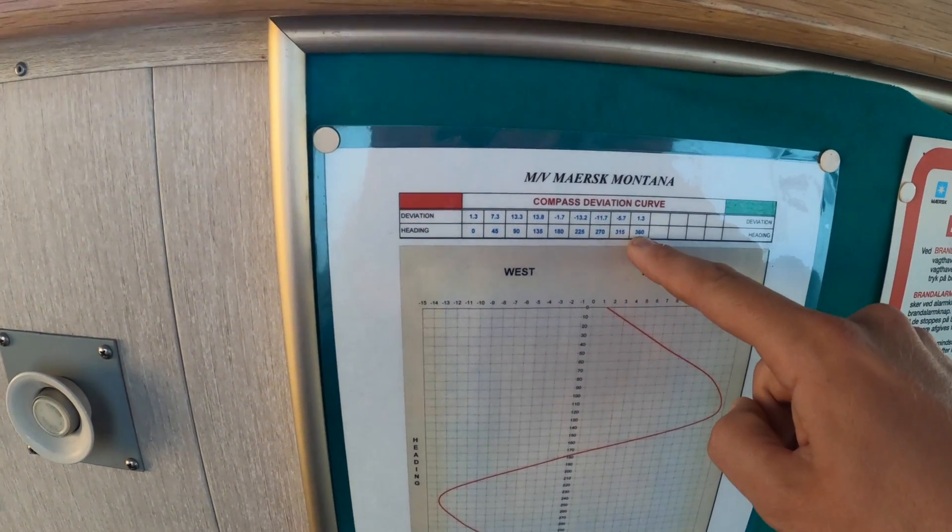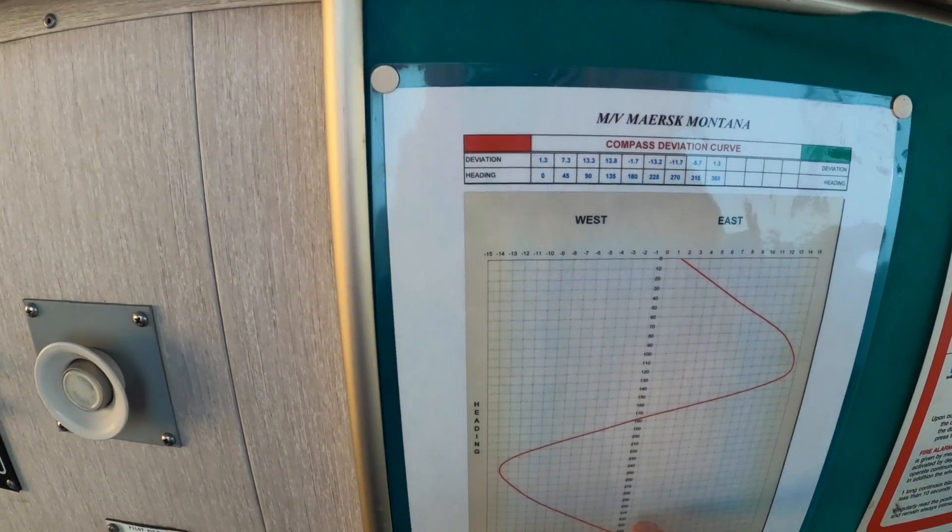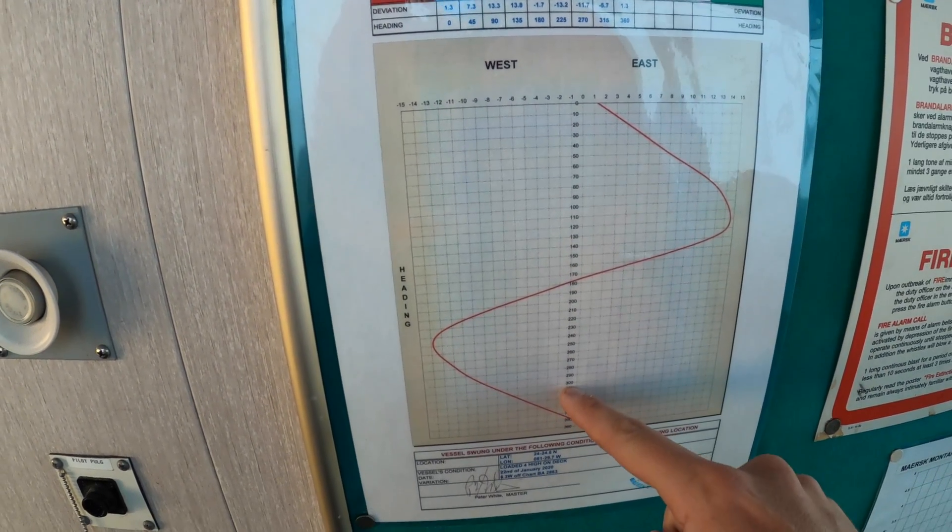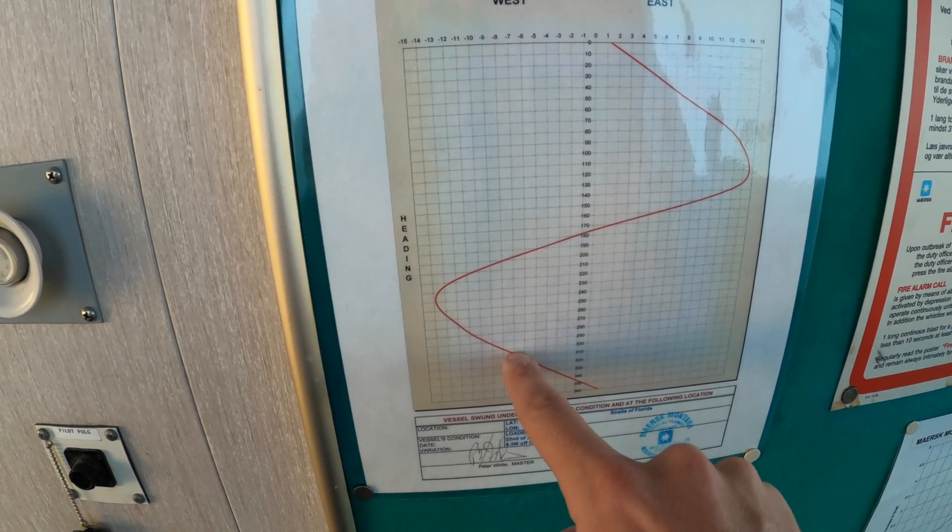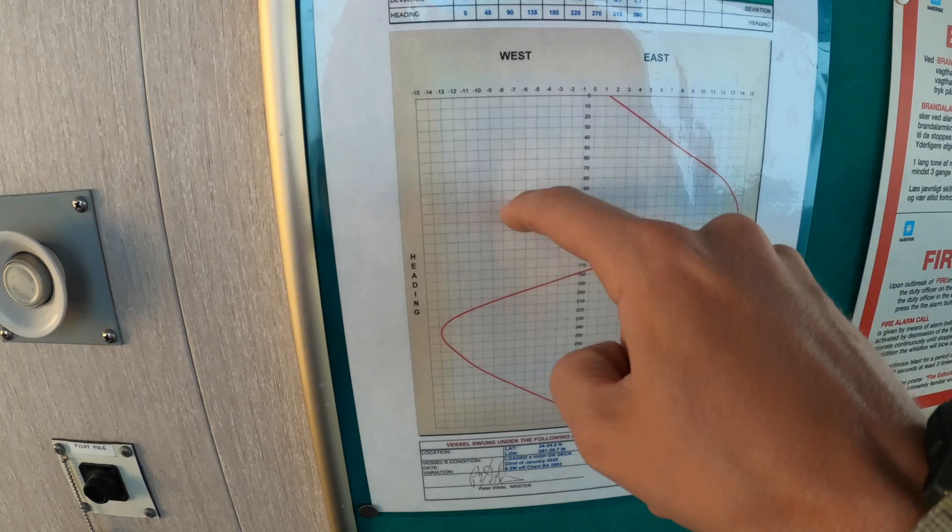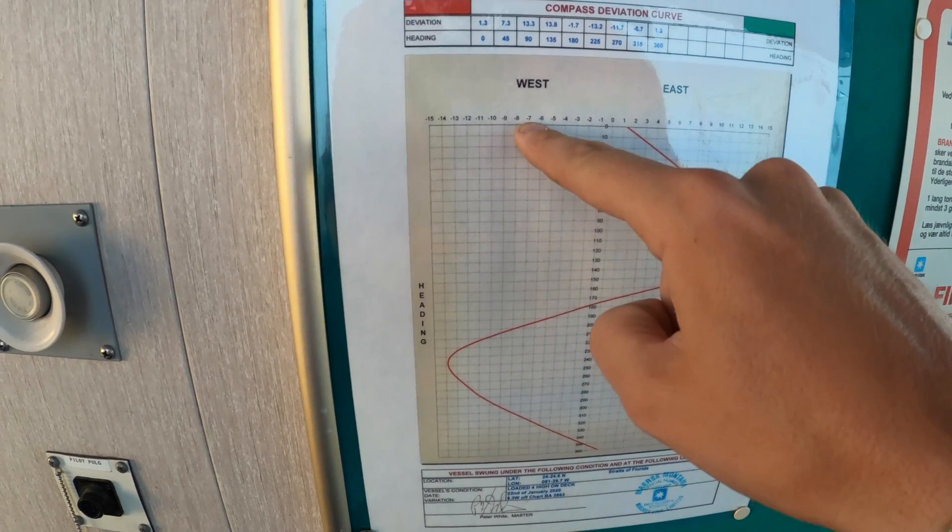So we know our magnetic compass heading is 304. So we run it all the way to where it intersects, which is right here at minus seven degrees west.